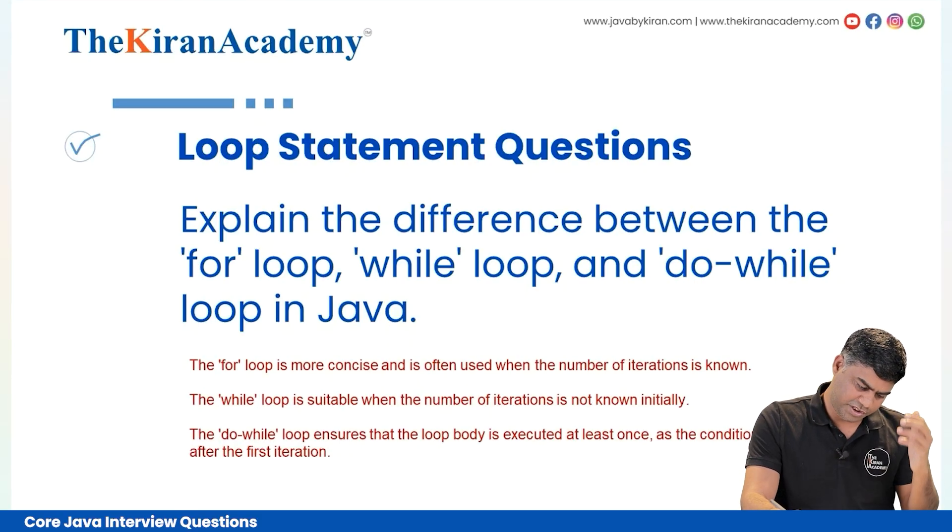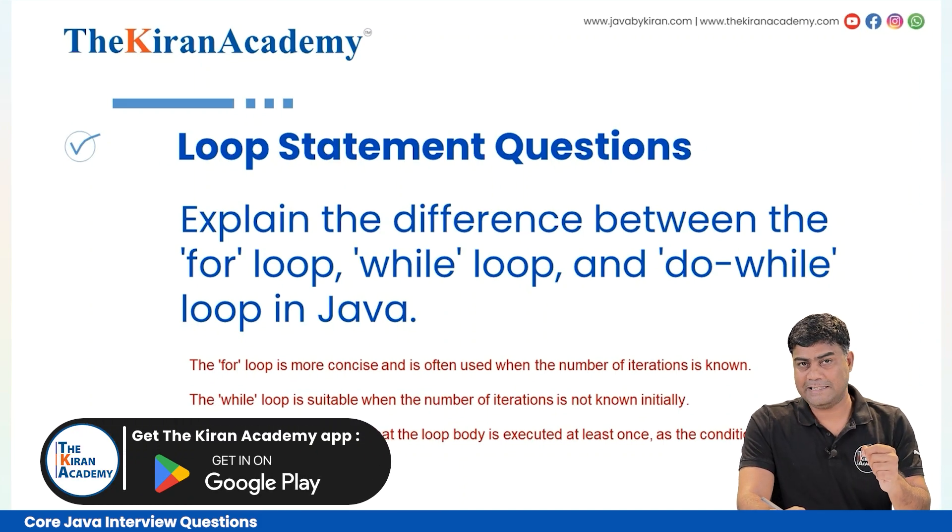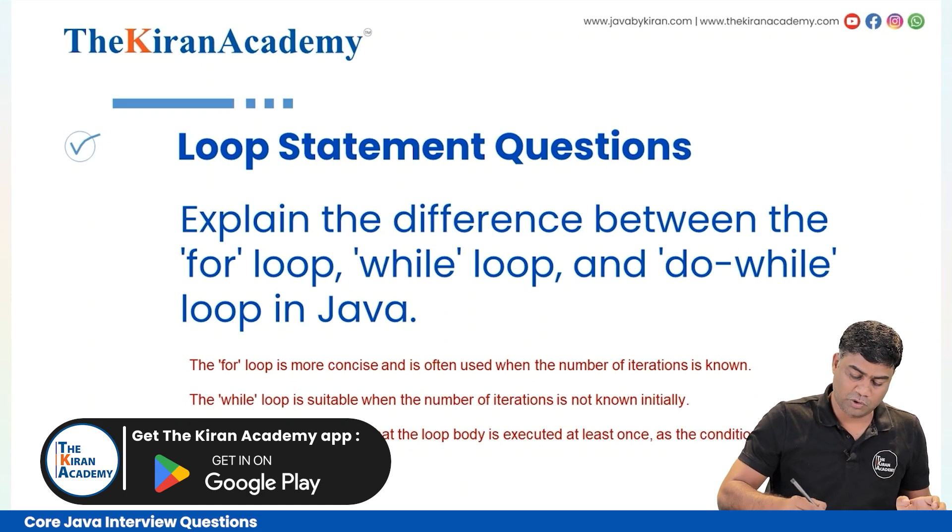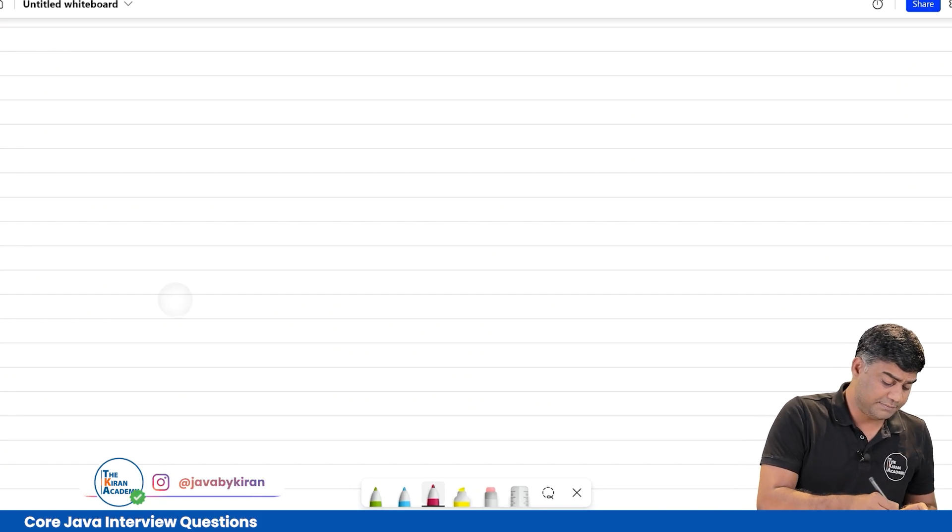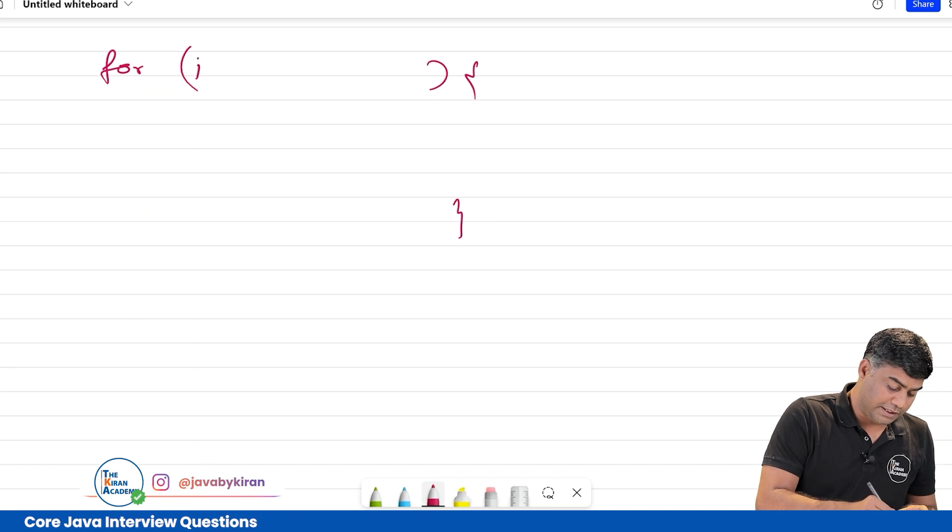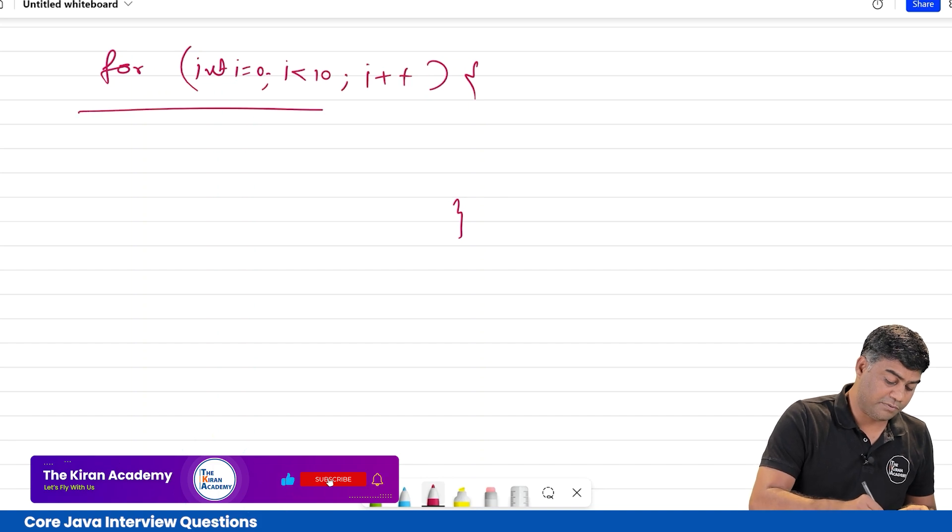First question: explain the difference between the for loop, while loop, and do-while loop. Remember, you need to remember the syntax of all these three. I'm going to explain this here. For loop, you write like this: int i = 0; i < 10; i++. So this is a for loop.